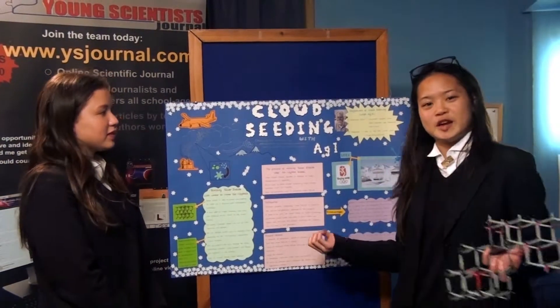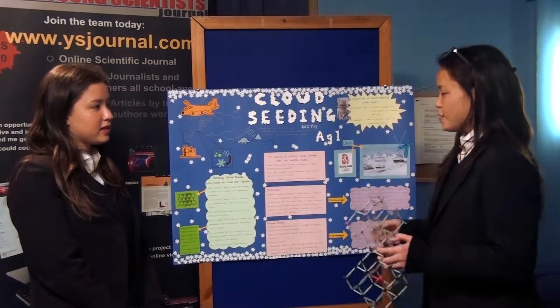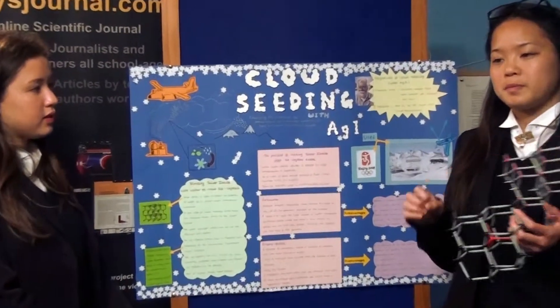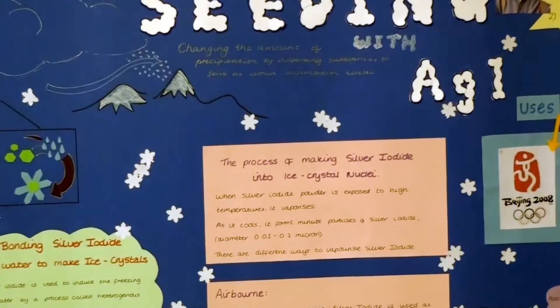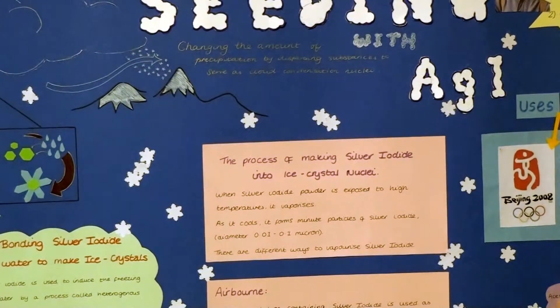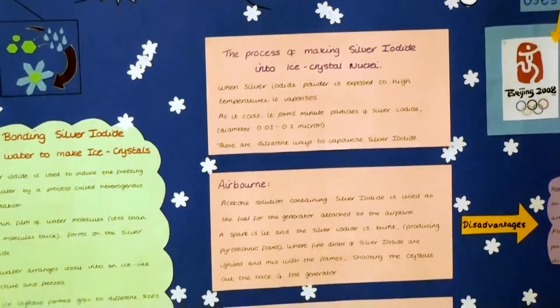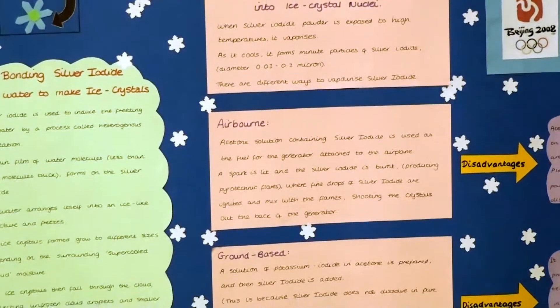In an airborne generator, silver iodide is put into a solution of potassium iodide in acetone, which is then burnt in the generator outside the plane, forming a pyrotechnic flare where the silver iodide is vaporized. When it cools, it forms crystals which act as the condensation nuclei.